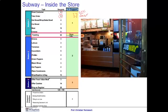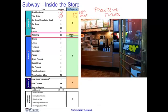We refer to this time as the processing time. Processing times are always expressed in seconds per customer, or more generally in units of time per flow unit. In the same way, station two has a processing time of 46 seconds per customer, and station three has 37 seconds per customer. Those numbers are called the activity times.